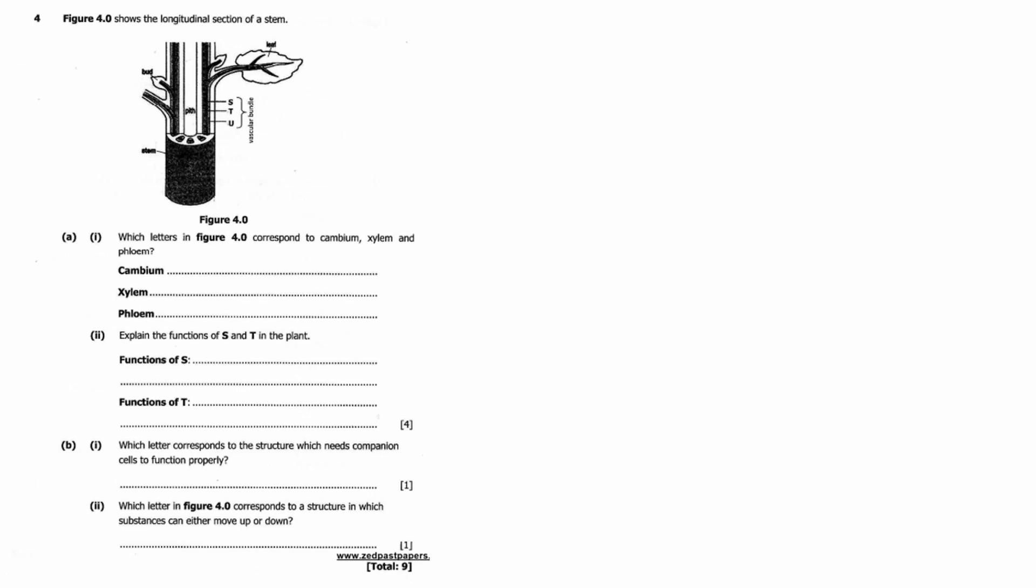So let us say the cambium is T, then the xylem is S, then the phloem is U. So the cambium is in between the xylem and the phloem, and the xylem is the innermost part of the vascular bundle, and the phloem is the outermost part of the vascular bundle.